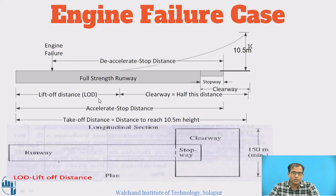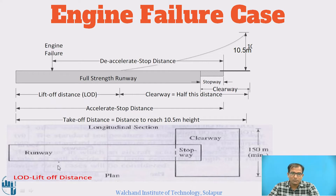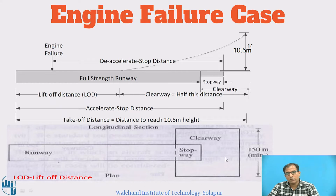The lift-off distance (LOD) and clearway: the clearway is equal to half this distance, and this is the accelerate-stop distance. In plan view, the full-strength runway includes the stopway and clearway. This is the area within the airport used for safe landing and takeoff, and the width of the clearway is a minimum of 150 meters.